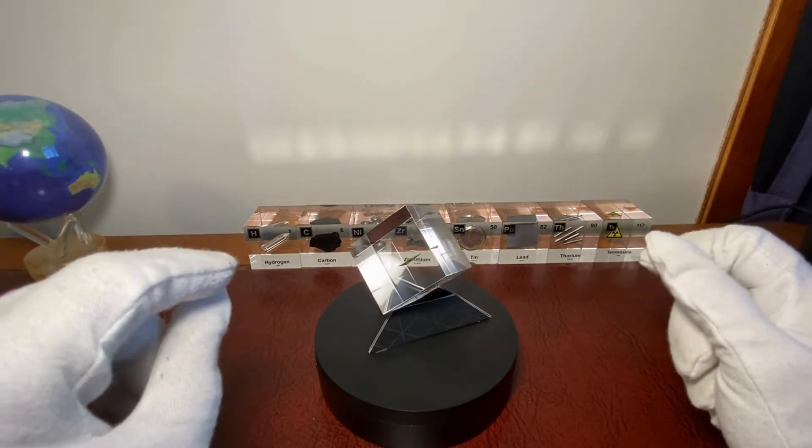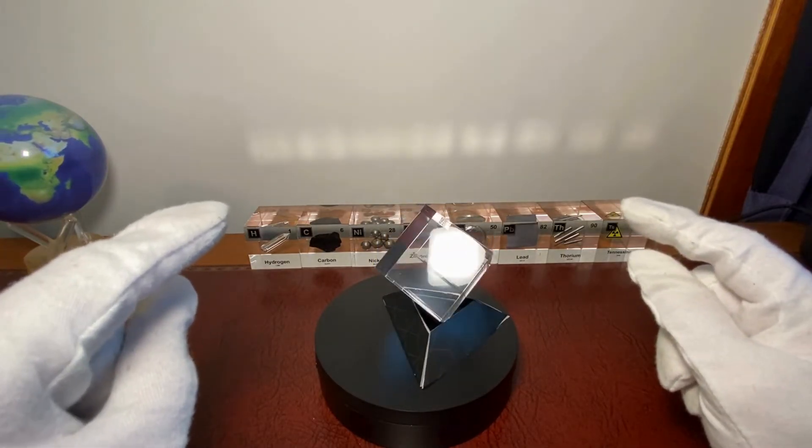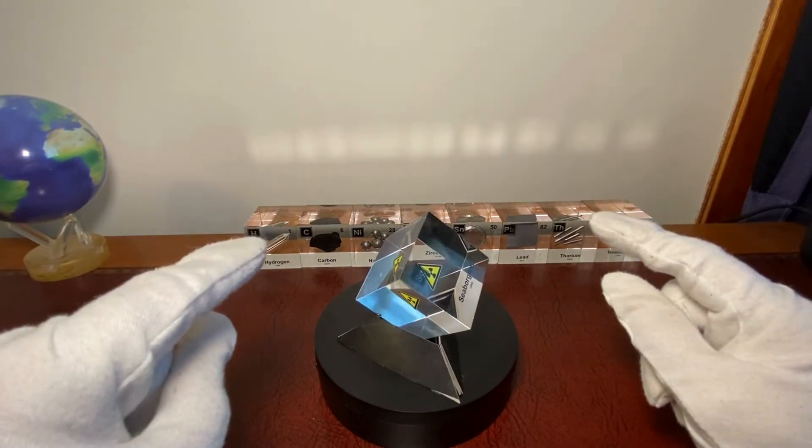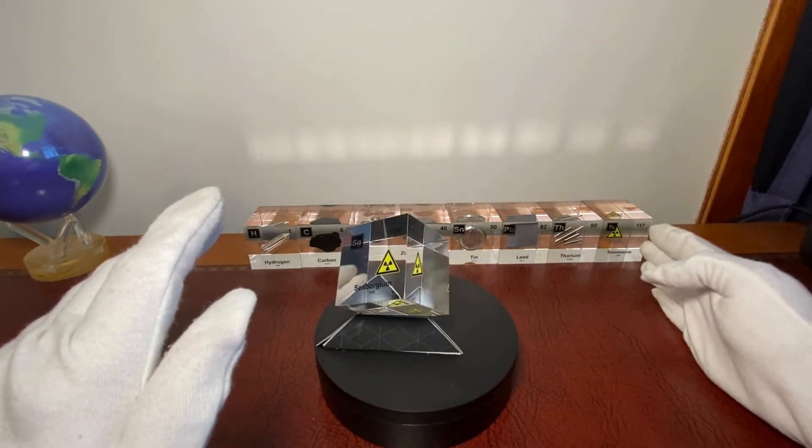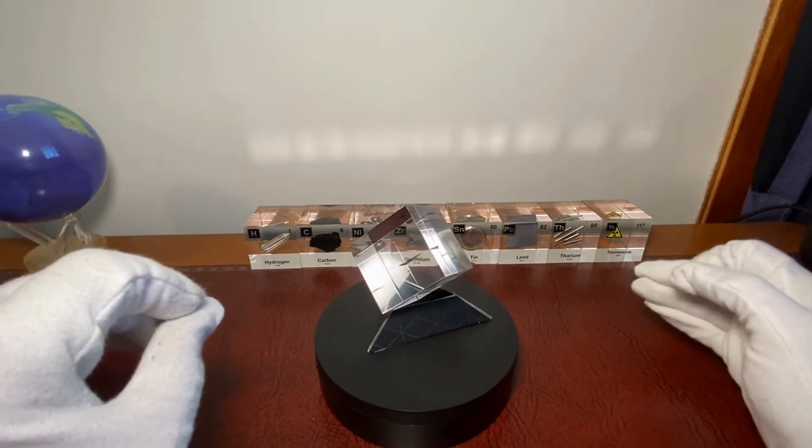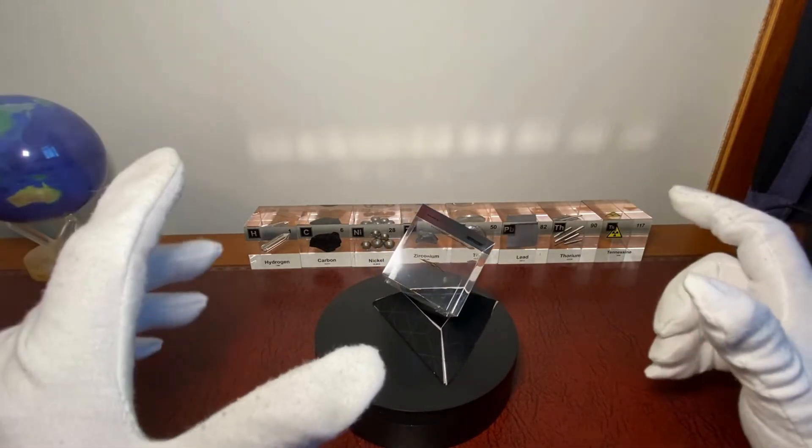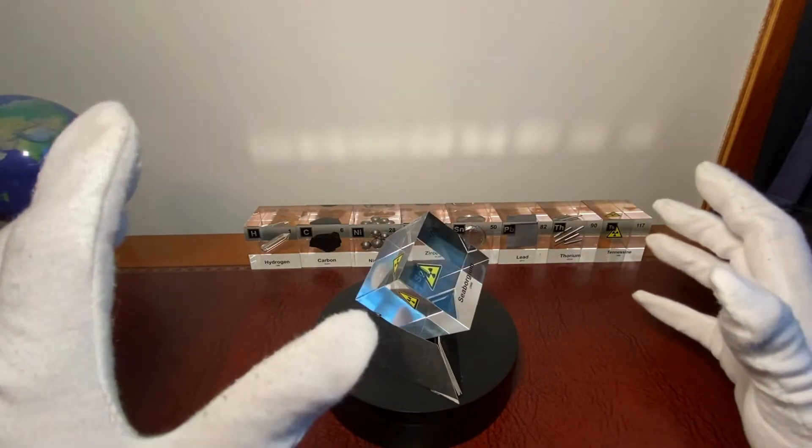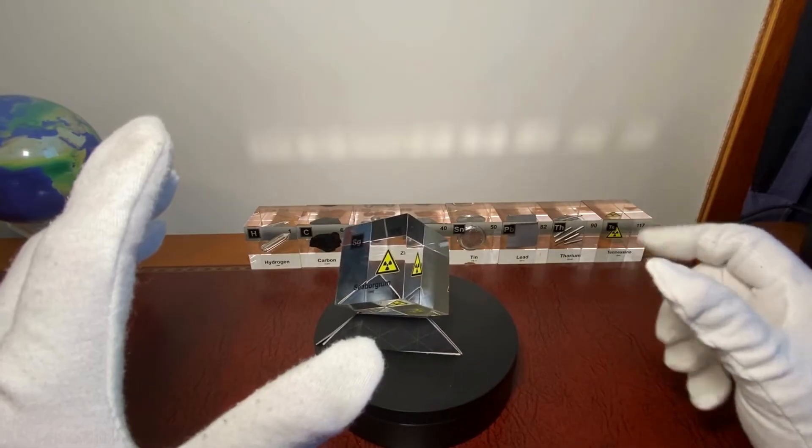There is also a theory that states that in the vast field of unknown elements, there is an island of stability. We have tennessine here, 117, and after that there is oganesson. Now after that there's probably much more elements, and the theory believes that there is a bunch of elements after that which could be much more stable than these elements which can only last for a couple of milliseconds. That's what they're trying to figure out in the past 20 to 40 years.